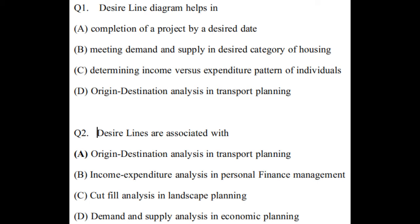The second question was of similar type: desired lines are associated with — Option A: origin and destination analysis in transport planning. Option B: income expenditure analysis in personal finance management. Option C: cut fill analysis in landscape planning. Option D: demand and supply analysis in economic planning. The correct answer is origin and destination analysis in transport planning. As you can see, the desired line diagram question has appeared two times in the GATE Architecture paper.